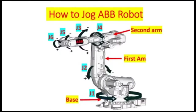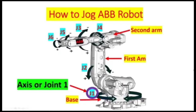Next, I'm going to show you the witness mark of every axis of the robot. But first, I'm going to familiarize you with the main components of the robot. This is the base, this is the first arm, and this is the second arm.